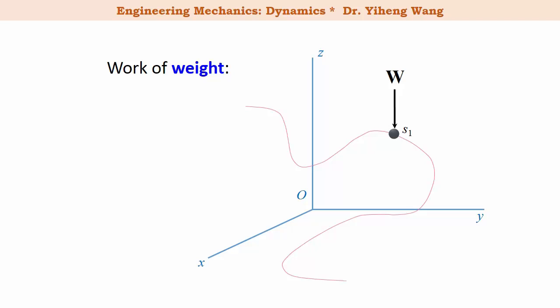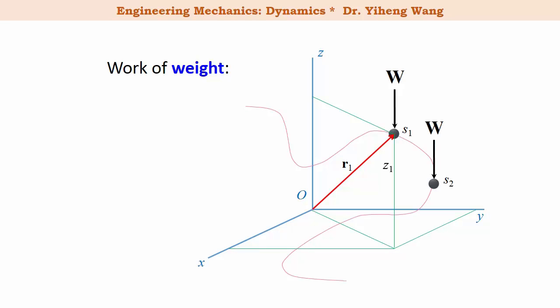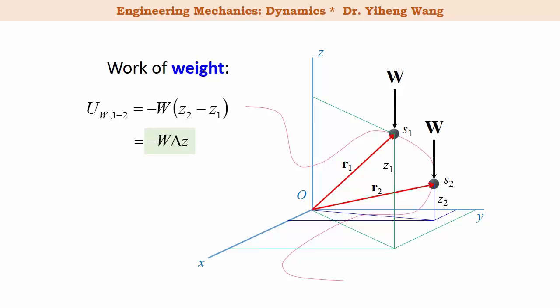For a particle undergoing curvilinear motion in an established rectangular coordinate system, initially it is at state one with a position r1 and vertical coordinate z1. After some time it has moved to a new position r2 with a new vertical coordinate z2. During this process, the work done by the gravitational force, or the weight force, acting on this particle equals to the magnitude of the force, which is negative w — negative because upward is considered to be the positive z axis — multiplied by the change in its vertical location, z2 minus z1, or simply negative w times delta z.